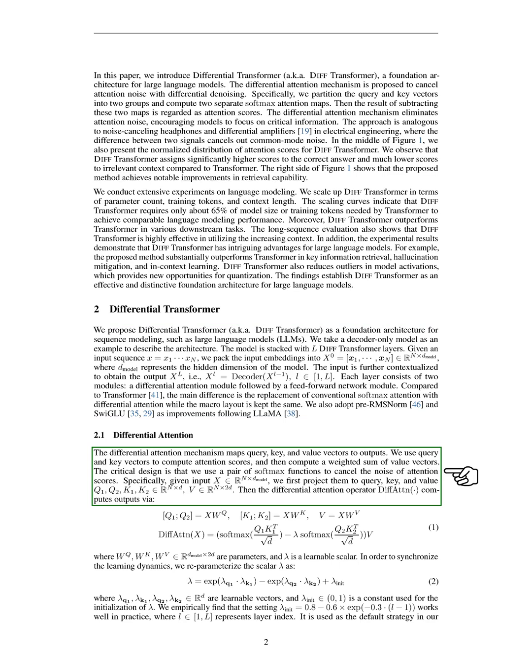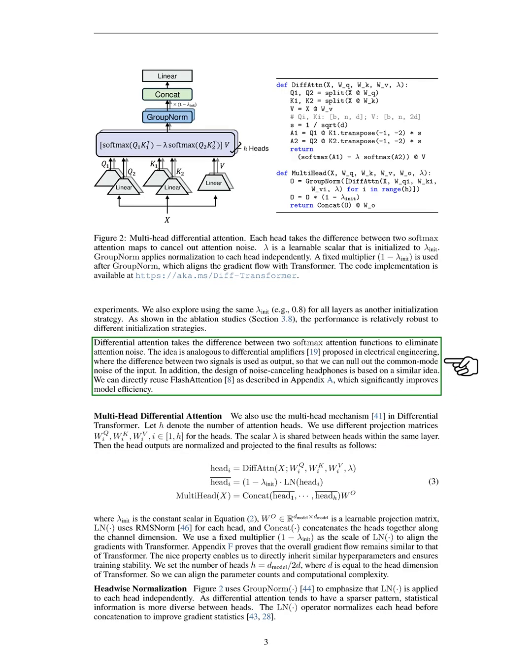In our attention mechanism, we map query, key, and value vectors to outputs. We compute attention scores using pairs of functions to cancel out noise. We project the input to obtain query, key, and value vectors, and our attention function processes these to produce outputs. We also synchronize learning dynamics through a re-parameterization of a scalar, which we initialize based on empirical findings. Differential attention works by taking the difference between two attention functions to eliminate noise, similar to how amplifiers and noise-canceling headphones operate. We can efficiently implement this using existing techniques, enhancing the model's overall performance.